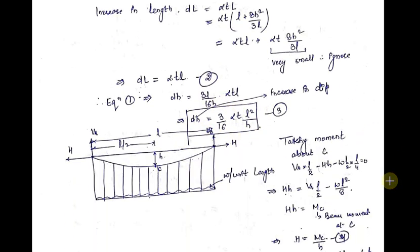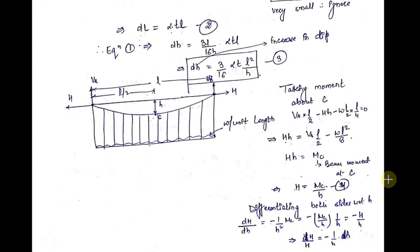Now let's come to the analysis part. Suppose this is your cable, these are the suspenders of the suspension bridge, and this is the deck on which the traffic will move. Suppose the load on this deck is W per unit length — that is, a UDL is acting on the cable.